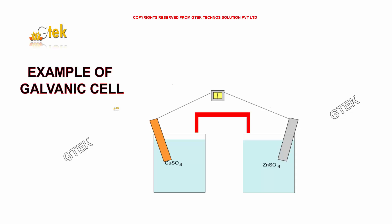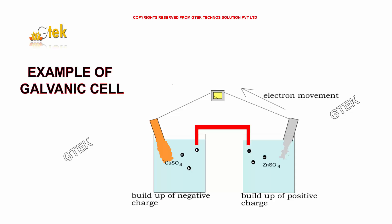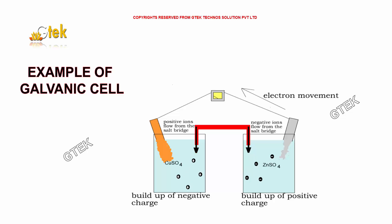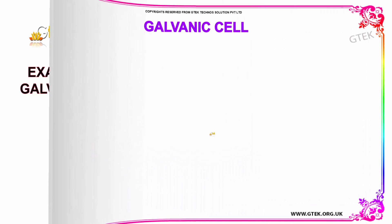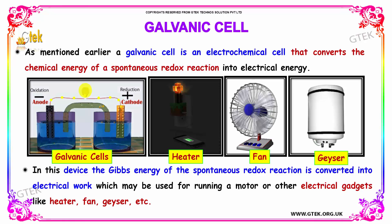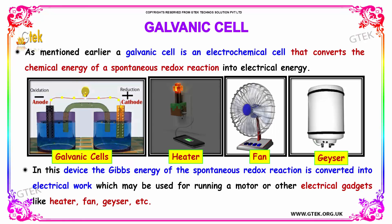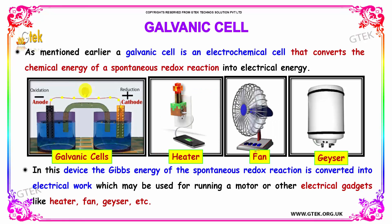A galvanic cell is an electrochemical cell that converts the chemical energy of a spontaneous redox reaction into electrical energy. In this device, the Gibbs energy of the spontaneous redox reaction is converted into electrical work, which may be used for running motors or other electrical gadgets like heaters, fans, and geysers.